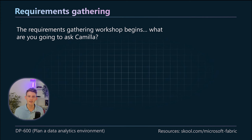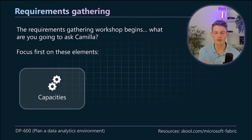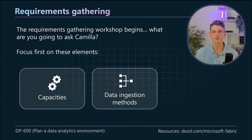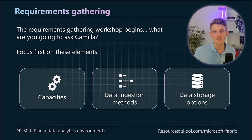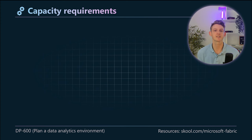So what are you going to ask Camilla? What do you need to know when identifying the requirements? You should think about focusing on three elements to begin with: capacities — how many do we need and what sizing? Then data ingestion methods — there are lots of different ways to ingest data into Fabric, and you'll ask questions to deduce the best method. Similarly, data storage — there are three different options for storing data in Fabric, so how do you ask the right questions to choose the right one?